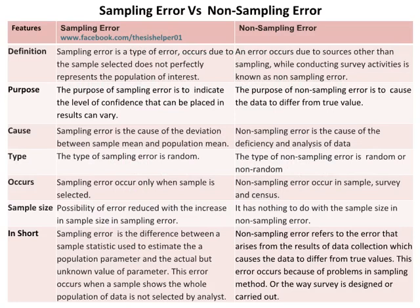Sampling error is a type of error that occurs due to the sample selected not perfectly representing the population of interest. Whereas an error that occurs due to sources other than sampling while conducting survey activities is known as non-sampling error. The purpose of sampling error is to indicate the level of confidence that can be placed in results, which can vary. Whereas the purpose of non-sampling error is to cause the data to differ from the true value.